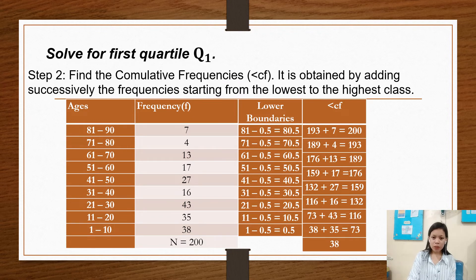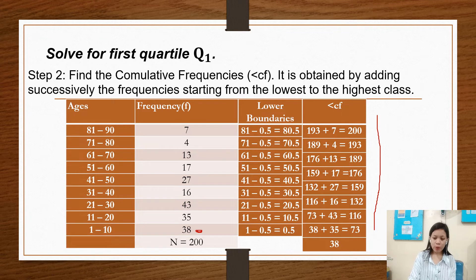In step 2, find the cumulative frequency. It is obtained by adding successively the frequencies starting from the lowest to the highest class. So these are the cumulative frequency. So we have to add from the lowest to the highest class. So 38 is our lowest frequency. We have to add 38 plus 35 equals 73.